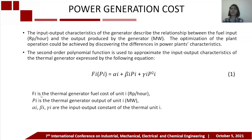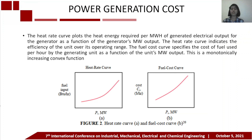The input-output characteristics of the generator describe the relationship between the fuel input and the output produced by the generator. The optimization of plant operation could be achieved by discovering differences in power plant characteristics. A second-order polynomial function is used to approximate the input-output characteristics of the thermal generator, expressed by equation 1. The heat rate curve gives the heat energy required per MWh of generated electrical output as a function of the generator's MW output, indicating the efficiency of the unit over the operating range. The fuel cost curve specifies the cost of fuel use per hour by the generating unit as a function of MW output, and is a monotonically increasing convex function.